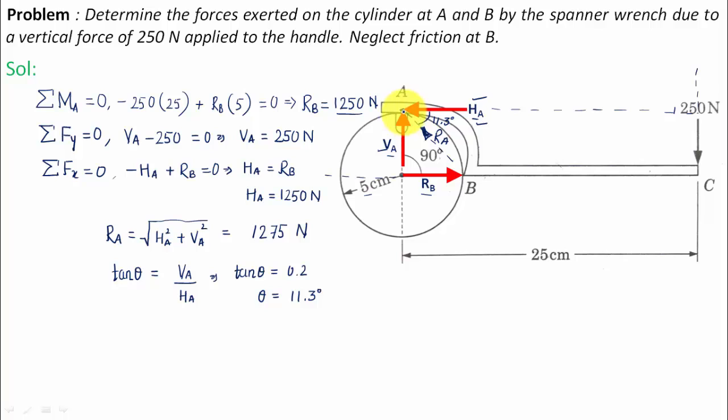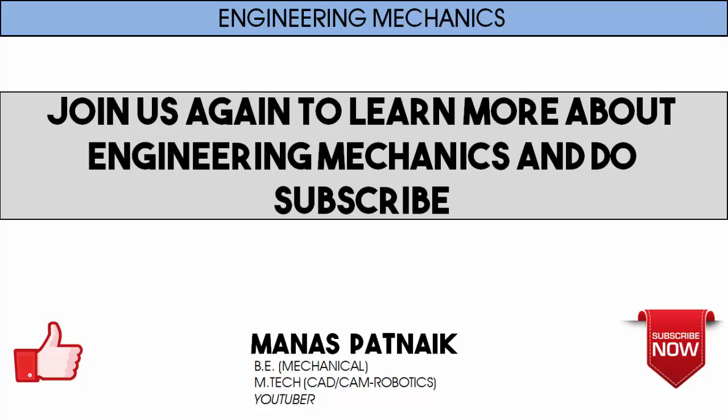This resultant is from the cylinder onto the spanner. If you want to know the resultant on the cylinder, the resultant from the spanner onto the cylinder will have the same line of action but the direction will be different, along this direction. This is RA and this angle is 11.3 degrees.